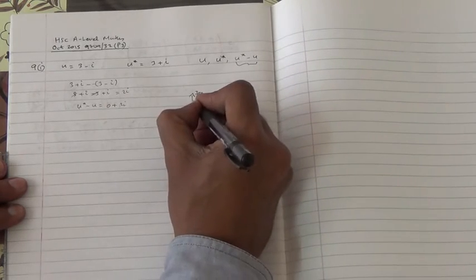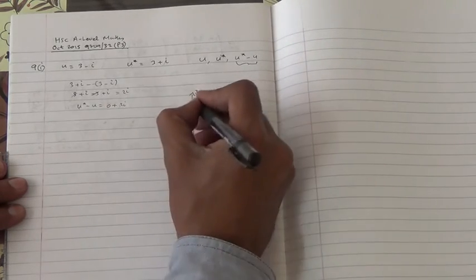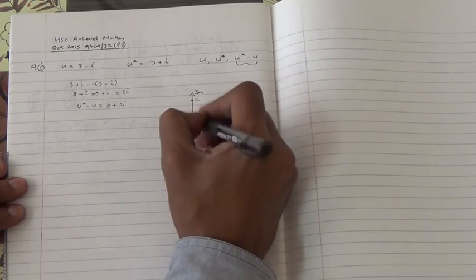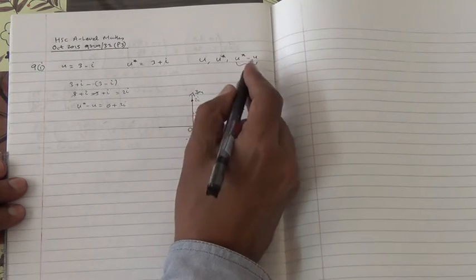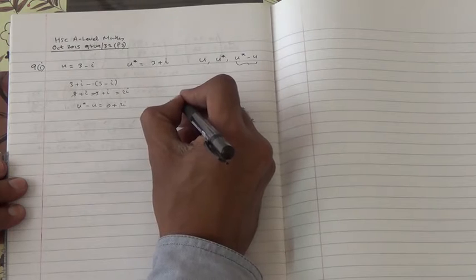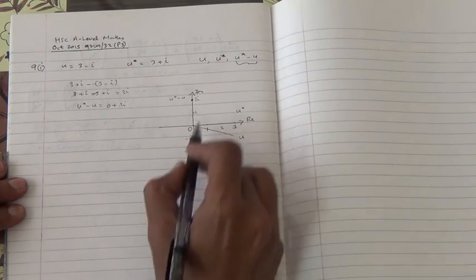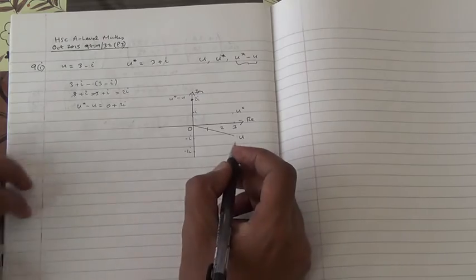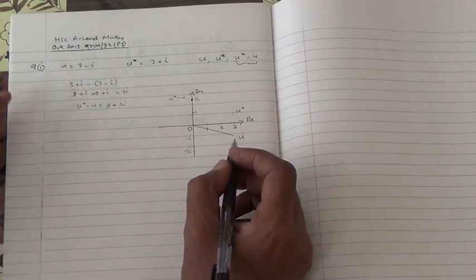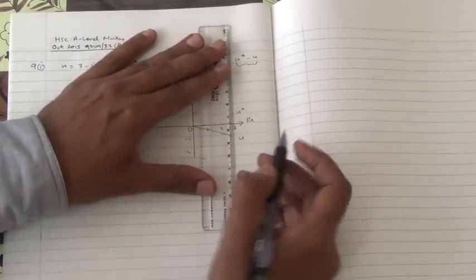So where is two i? That basically is u star minus u is going to be zero plus two i. So zero and then two i is somewhere here. So this is going to be this point here. This line here, basically, is u star minus u. Now, we've been asked to state what type of quadrilateral.